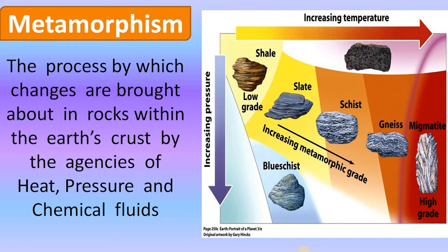Physical geology has another parameter called metamorphism. Metamorphism means the process by which changes are brought about in rocks within the earth crust due to some agencies, especially heat, pressure, and chemical fluid — probably water. Increasing pressure and increasing temperature changes a rock. For example, shale is a low-grade sedimentary rock; due to increasing pressure and temperature, shale slowly converts into slate, then schist, then gneiss, and finally migmatite, which is a high-grade metamorphic rock.